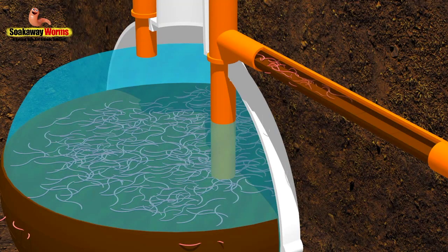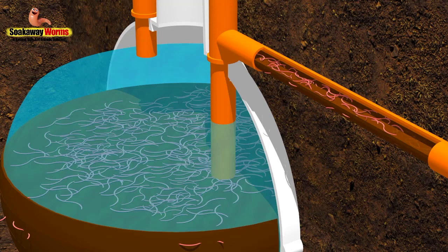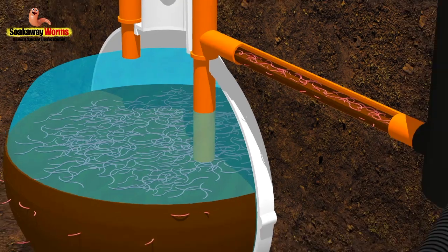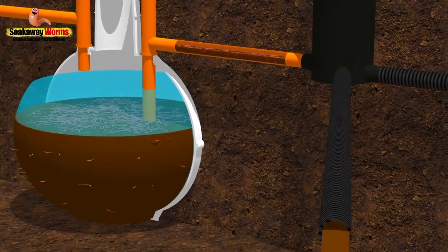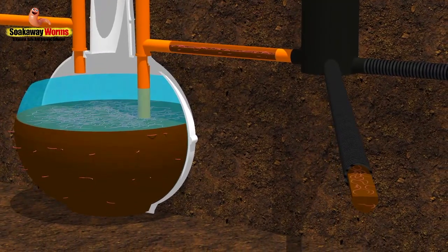From there, these worms will make their way deep into the main arteries of the soakaway, reaching into all the nooks and the crannies and the areas that rodding and jetting just cannot get to.